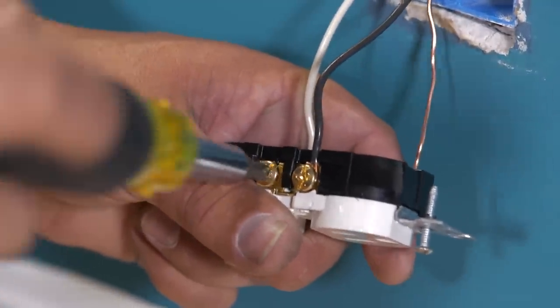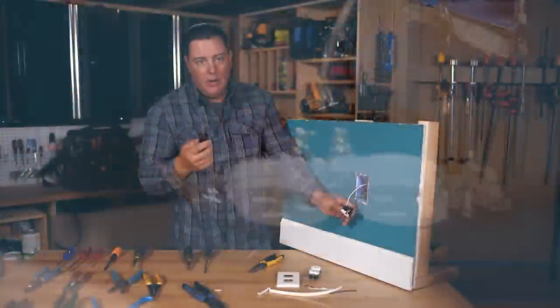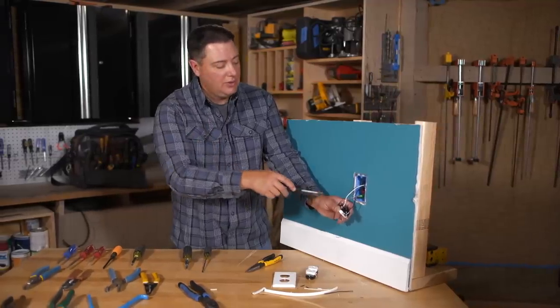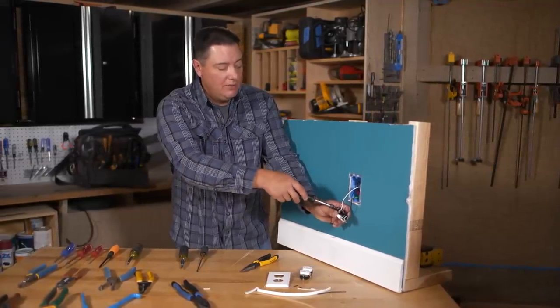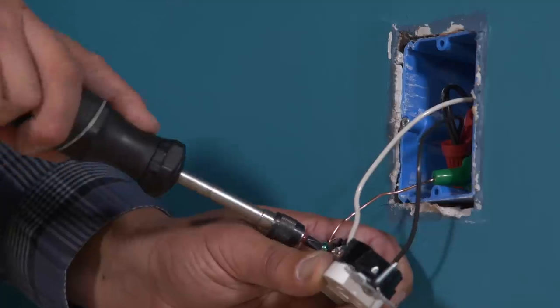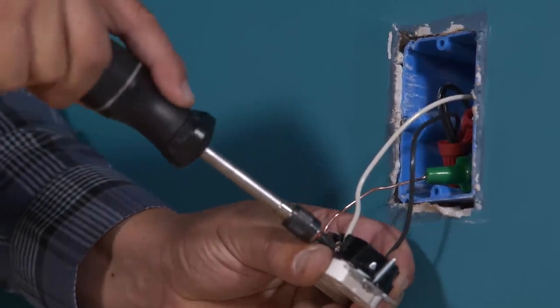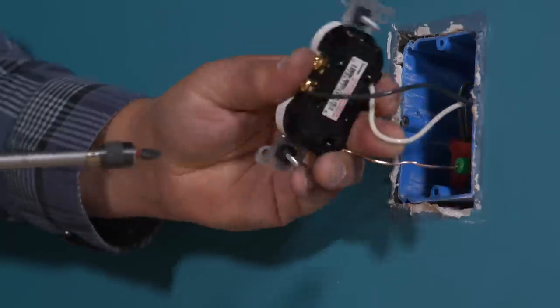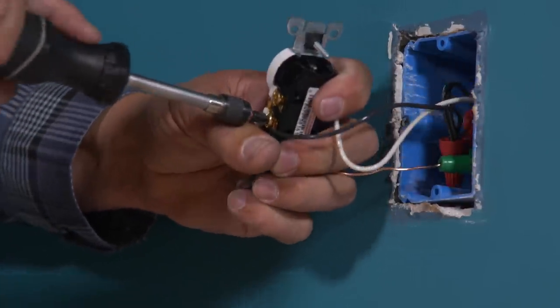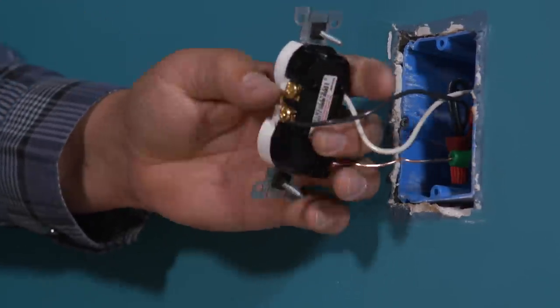And lastly, before we get ready to install it, we're going to go ahead and use a torque screwdriver to actually torque these screws to the right setting. On this device, it's somewhere between 14 and 16 inch pounds. So you hear that pop? It tells you it's where it wants to be. All right.